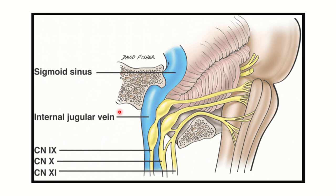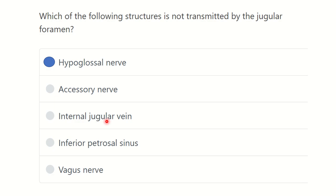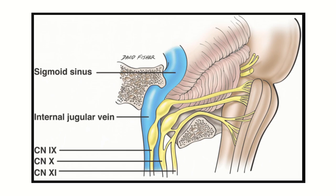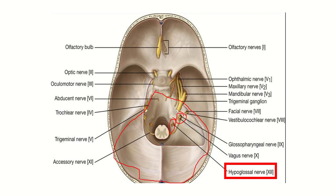So through the jugular foramen, three important nerves pass: cranial nerve 9 (glossopharyngeal), cranial nerve 10 (vagus), and cranial nerve 11 (accessory). The veins — internal jugular vein and inferior petrosal sinus — also pass through the jugular foramen. So our final answer is now clear: the hypoglossal nerve does NOT pass through the jugular foramen.